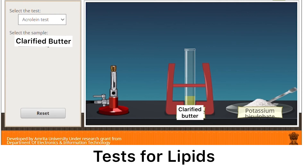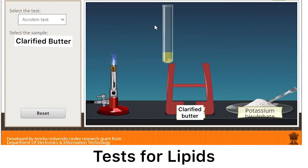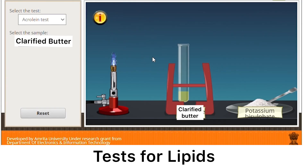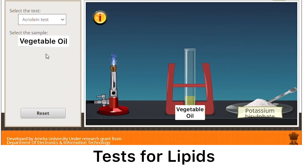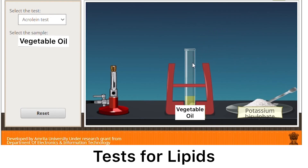For the acrolein test, we will just be adding a small amount of potassium hydrogen sulfate crystals with our lipid samples and then heat the mixture directly on a burner. Observe the formation of a gas and odor that will be produced. Record this as your observations. Then repeat the steps for vegetable oil and for linseed oil and record your observations.